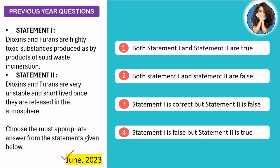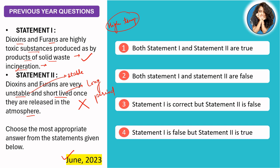The June 2023 question has two statements about dioxins and furans. Statement one: dioxins and furans are highly toxic substances produced as by-products of incineration at high temperatures of waste. Statement two: dioxins and furans are very unstable and short-lived once released into the atmosphere. In fact, they are very stable and persist for a long period. So statement one is correct, but statement two is incorrect.